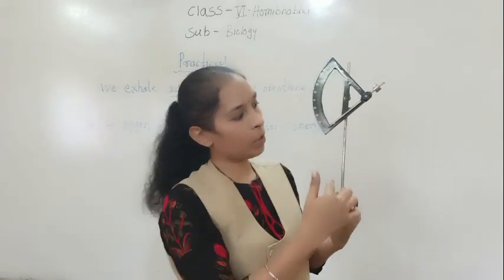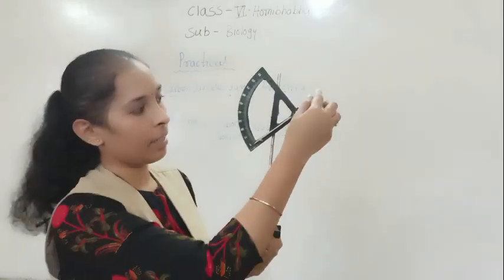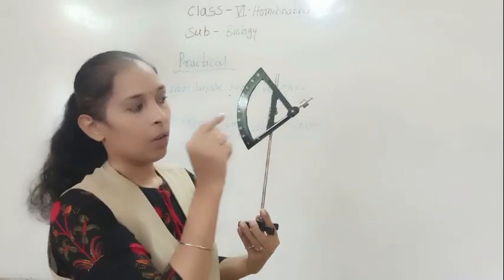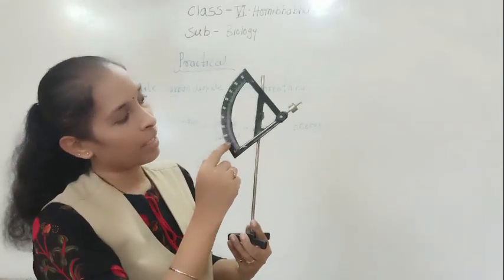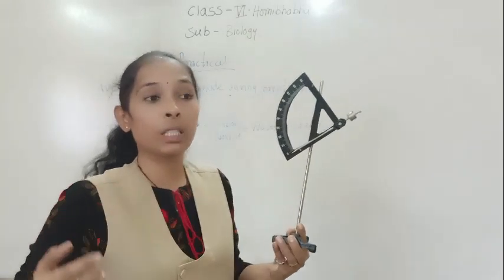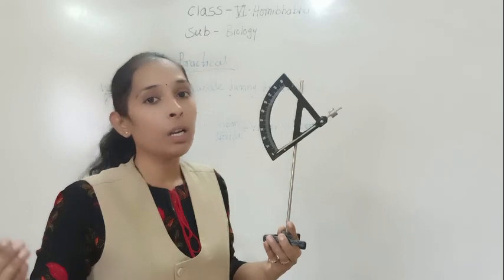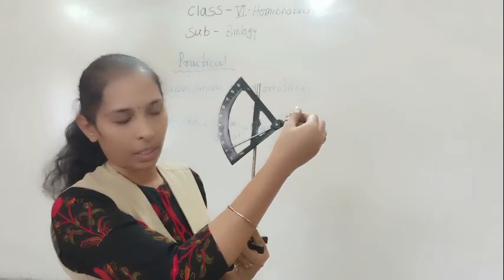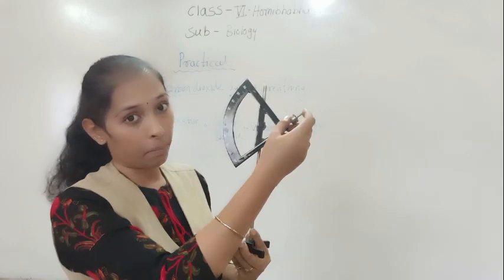See this is the instrument. It is called arc auxanometer. Here is one lever which is moving like this, and what we have to do - here you can see some scales. With the help of these scales, we can find out what is the exact growth of a plant. So we have to tie the thread over here to the plant. I have shown you in the image also.